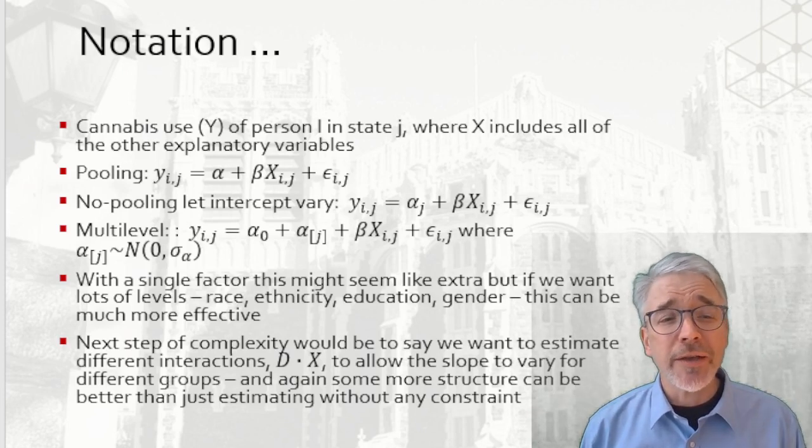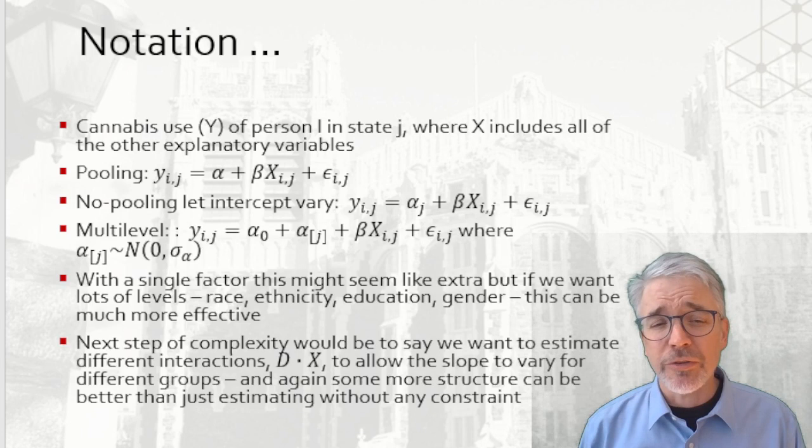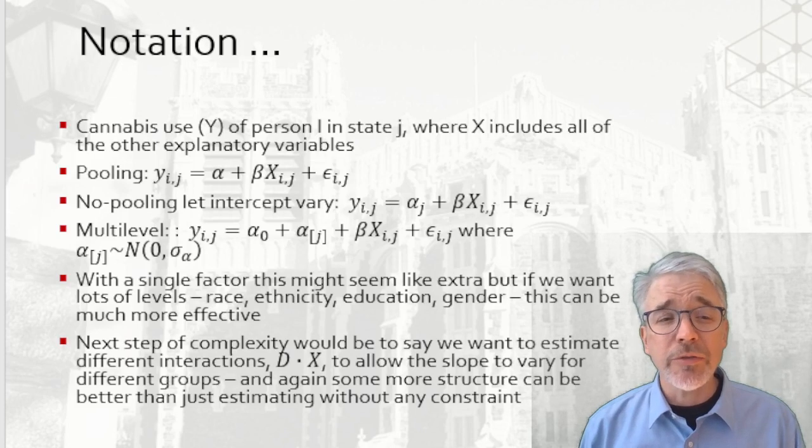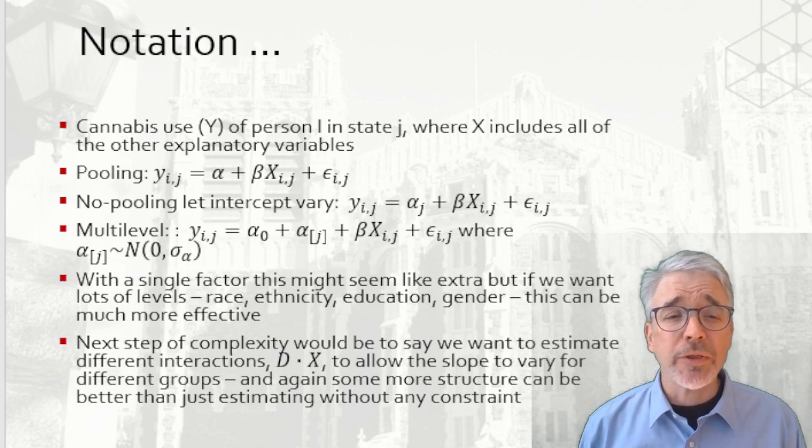If we have only a single factor, then this might be a little extra, but that generalizes to models with lots of different factors: race, ethnicity, education, gender, etc. With more and more intersecting segments, each bucket of that intersection is going to get smaller. That risks having estimators chasing outliers. Therefore, the additional structure can be really helpful.